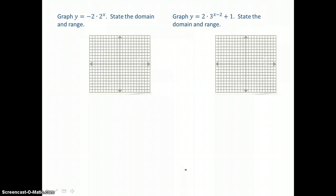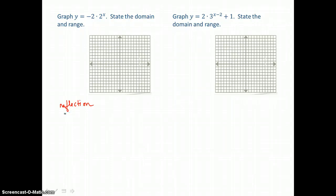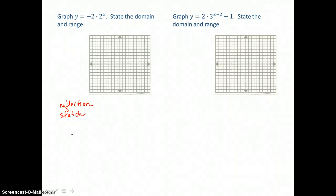We have two more graphs on this page. The first one is y equals negative 2 times 2 to the x power. That negative a value is going to cause a reflection. And because the absolute value of a is 2, which is greater than 1, we know this is going to be a vertical stretch of our exponential growth curve.